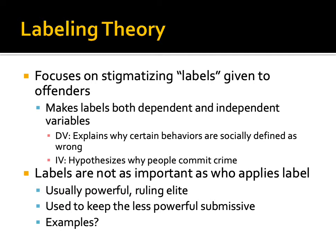The independent variable, however, hypothesizes why people commit crime — it's this independent variable of the label that matters more, at least in this class. What's really interesting here is the labels are not nearly as important as who applies the label. The basic idea is how people are labeled affects their behavior, but the labels are not as important as who applies them. Usually it's a powerful ruling elite that gives people labels, and it's used to keep the less powerful submissive.